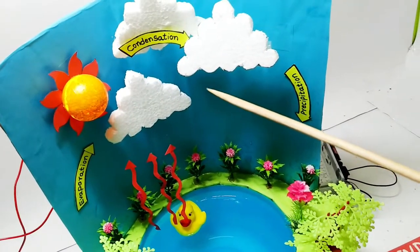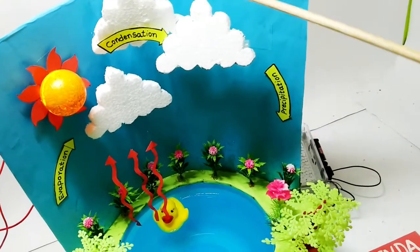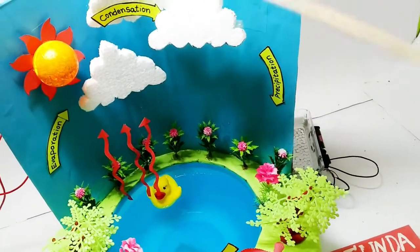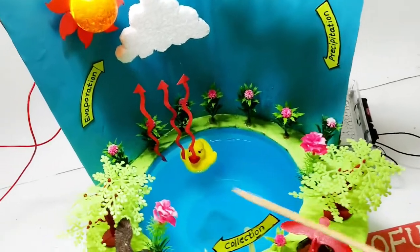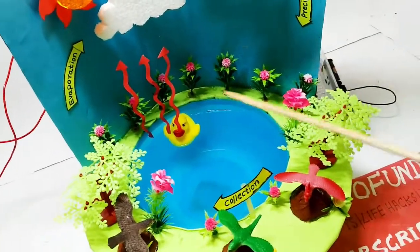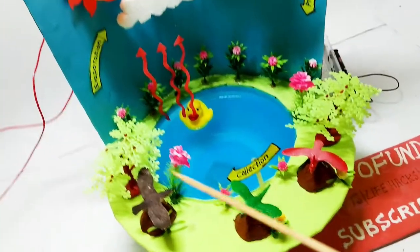Because of precipitation, it rains and the water goes back to the ocean, river, or pond, completing the entire cycle.